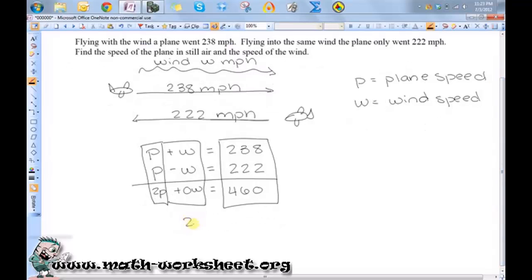Okay, so that means 2P equals 460. So now I have an equation with only one variable, and I can easily solve that for P by dividing both sides by 2. So P is equal to 230 MPH.